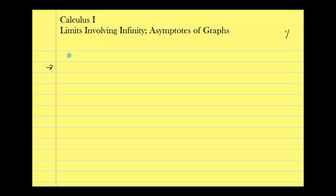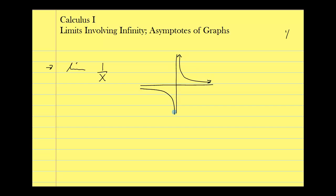To get started, let's look at a very familiar graph — the limit of 1 over x. Before, we've looked at this graph and taken the limit as x approaches 0. Let's do a quick curve sketch first. This is a graph you should be able to sketch easily: first and third quadrants. We see an asymptotic line at x equals 0 because that makes the fraction undefined, and more surprisingly, there's also a horizontal asymptote. So we have both a vertical asymptote and a horizontal asymptote.